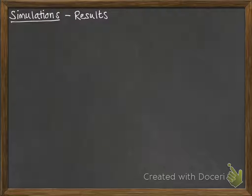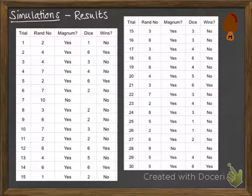We have set up what the tools are, we've written out what a trial will look like, and now we need to actually complete them and get our results. We're working with the magnum problem, and this is my table of results.